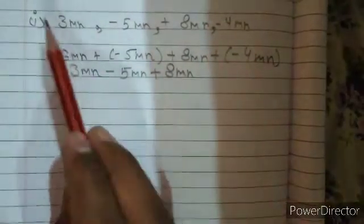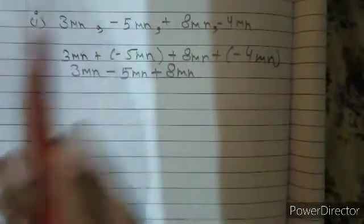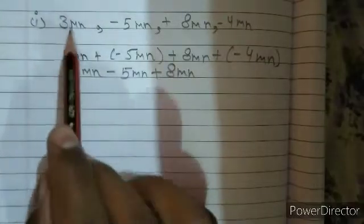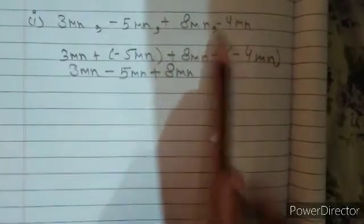Today we have this question: 3mn minus 5mn plus 8mn minus 4mn. We have to add these. So we write it down 3mn plus minus 5mn plus 8mn plus minus 4mn.